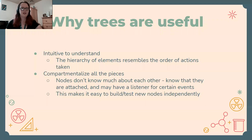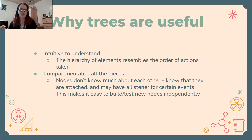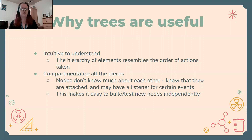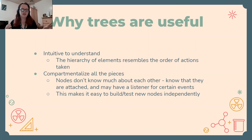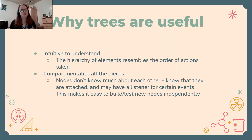So why would we use trees? First of all, they're intuitive to understand. The hierarchy of elements in a tree resembles the order of actions taken — it's very easy to understand how the system is laid out when you display it as a tree. It also compartmentalizes all of the pieces of an application. Nodes don't really need to know that much about each other — they need to know what their children are, how to get to their children, and maybe have a listener for certain events. It's very self-contained, making it easy to build and test nodes independently. Imagine a large team where everyone works on nodes independently — since they're so compartmentalized, changing one node won't really affect the others.